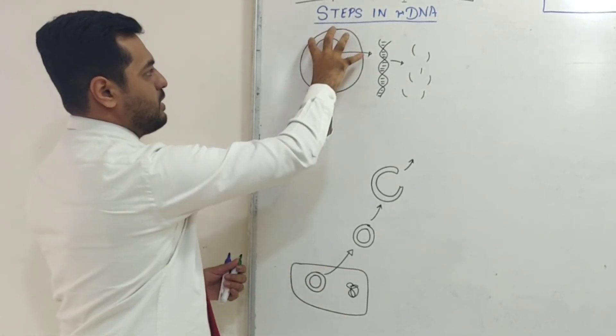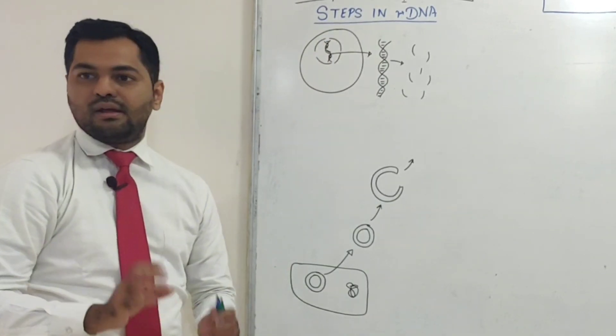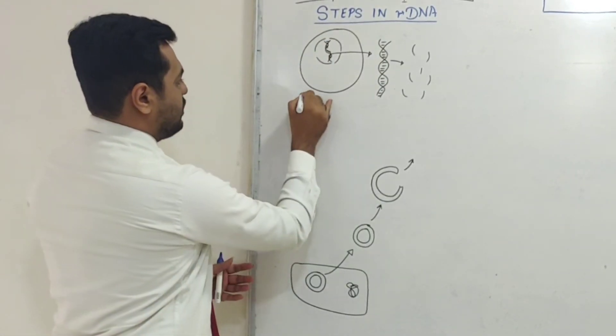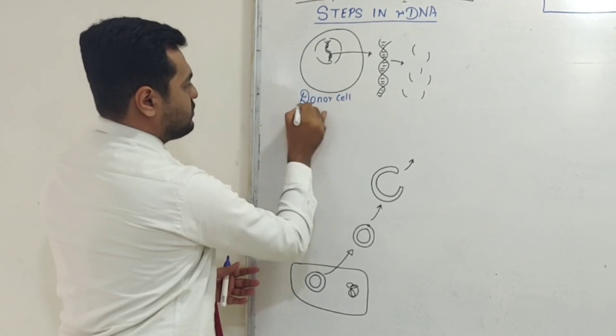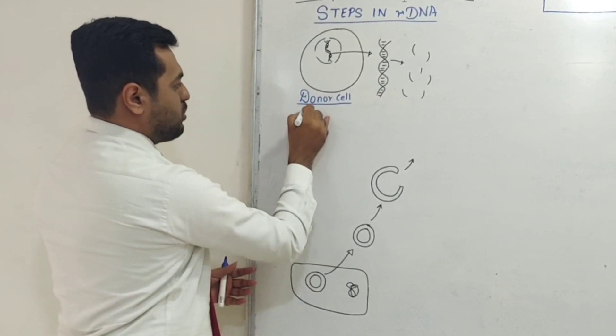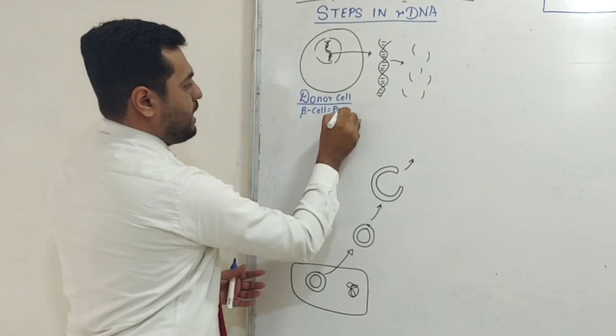This is a donor cell. Let us consider this donor cell - we have taken the beta cell of the islets of Langerhans of the pancreas, which has the insulin gene present inside it.